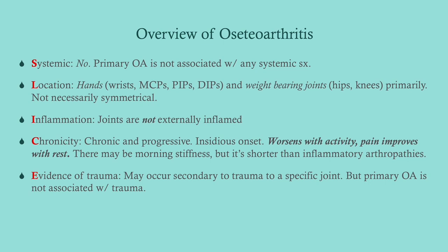I like to use the SLICE mnemonic when categorizing arthritis. First, look for systemic signs — in osteoarthritis there will be none. Location: look for the hands, especially the wrists and fingers, and weight-bearing joints like the hips and knees. It is not necessarily symmetrical, though it can be. As far as inflammation, you're not going to have that redness and warmth you'd see in septic arthritis, gout, or RA. Chronicity: it is chronic and progressive, maybe a little worse in the morning.